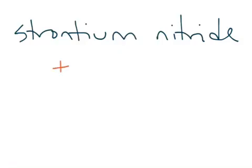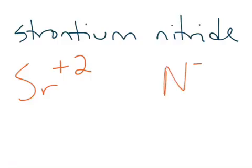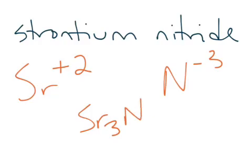Strontium nitride: strontium is plus 2, and nitrogen is minus 3. So we're doing that common multiple situation again. The only way for these two numbers to work out is if we have 3 ions of strontium to make an overall plus 6, and 2 ions of nitrogen to make an overall minus 6. So the symbol is Sr₃N₂.